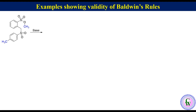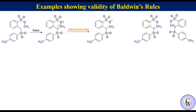Let's check the validity of Baldwin's Rule for an endotet reaction. When this substrate is allowed to react under basic conditions, a carbanion intermediate is generated. It may undergo intramolecular nucleophilic substitution to produce a product, or it can also undergo intermolecular nucleophilic substitution with another molecule to produce the same product. If you look at the intramolecular reaction, it falls under the category of 5-endotet, which is disfavored according to Baldwin's Rule. So the intramolecular mechanism is less likely.